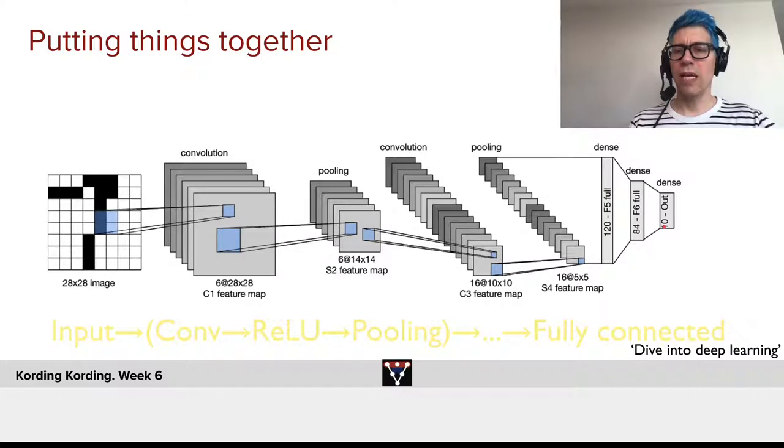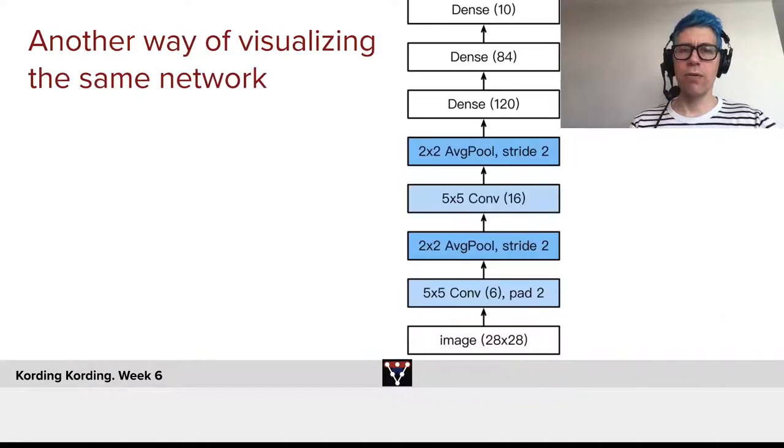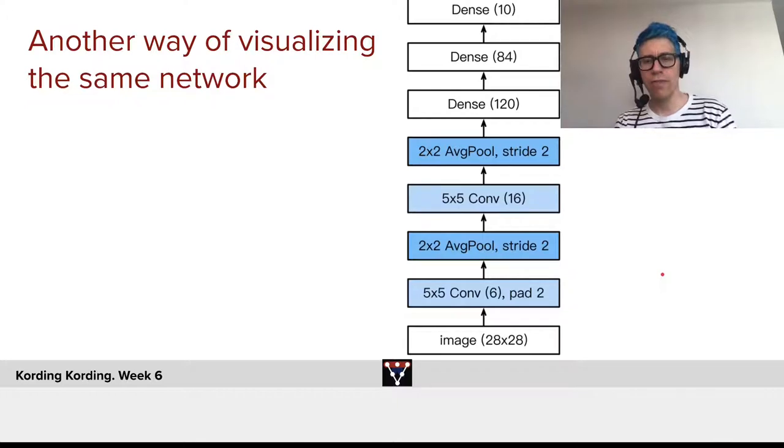So, this would be how a larger convolutional tree would look like. Another way, much more convenient to visualize that, we take an image, 5 by 5 convolution with padding of 2, 2 by 2 average pool, stride 2.